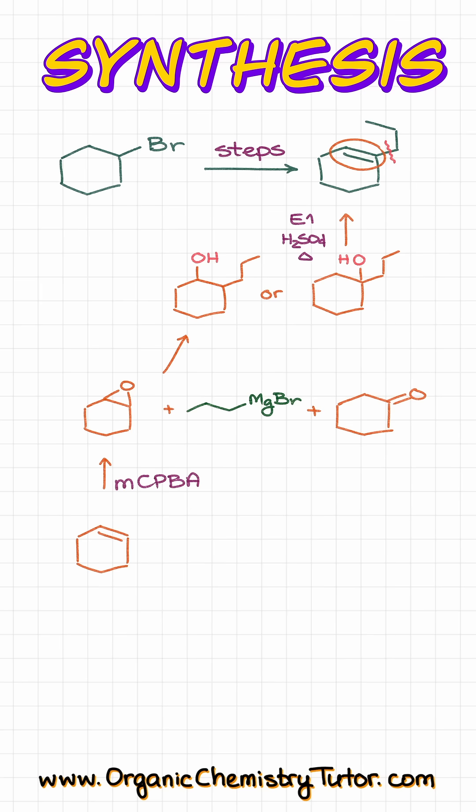Now, the epoxide can be easily made from the corresponding alkene using something like MCPBA, and the alkene we can easily make from the starting material via a simple E2 elimination reaction.